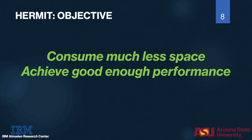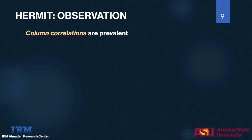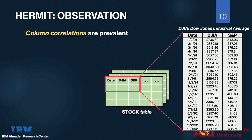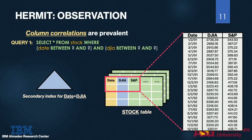The objective of our HERMIT index is to design an index structure that consumes much less space but still achieves good enough query performance. The key observation that inspired HERMIT is that column correlations are prevalent. Consider a table storing historical stock data. This table has at least three columns: the date, the Dow Jones Industrial Average, and the S&P Index.